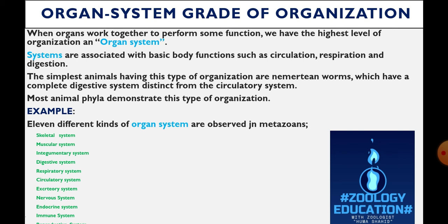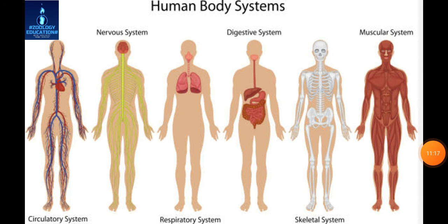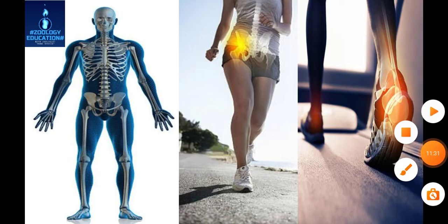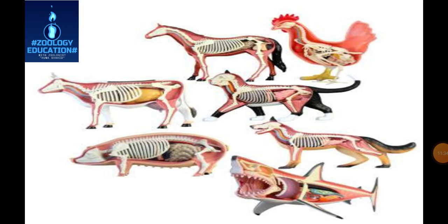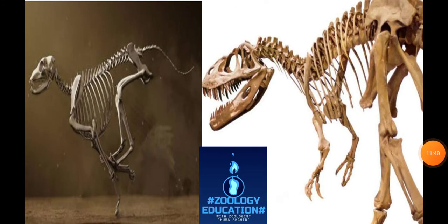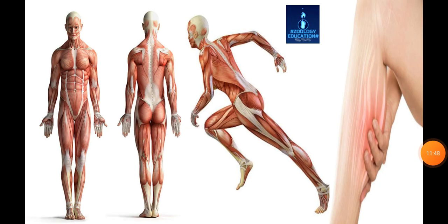Our first organ system forms a skeleton as shown in this slide. You see circulatory system, nervous system, respiratory system, digestive system, skeletal system, and muscular system of humans. Different animals show different patterns of skeleton according to their architectural pattern. As you can see, a skeletal pattern of a dinosaur which evolved in different animals. Then the muscular system — our whole body is covered with muscles which stretch and contract according to the movement of the living body.